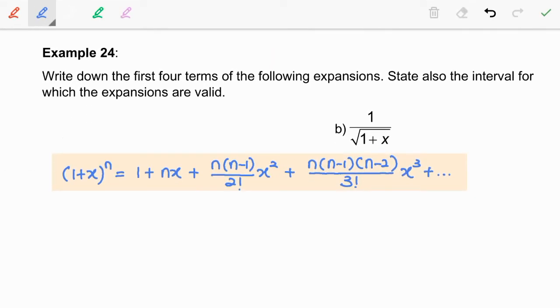Next, let us move on to question B: 1 over square root of 1 plus x. Let us express this as 1 plus x to the power negative 1 over 2. We notice that the power number is a negative fraction. So, similar with the previous question, we will use this binomial formula.